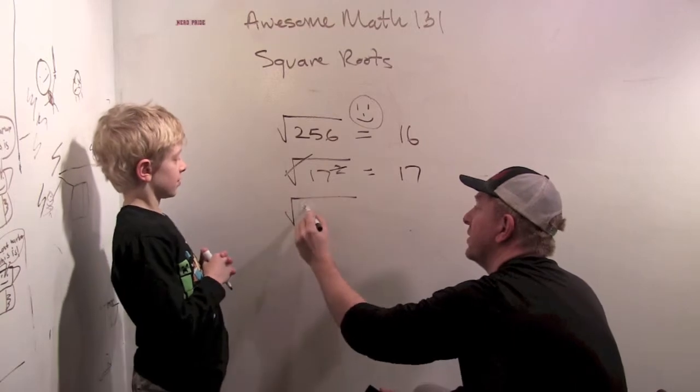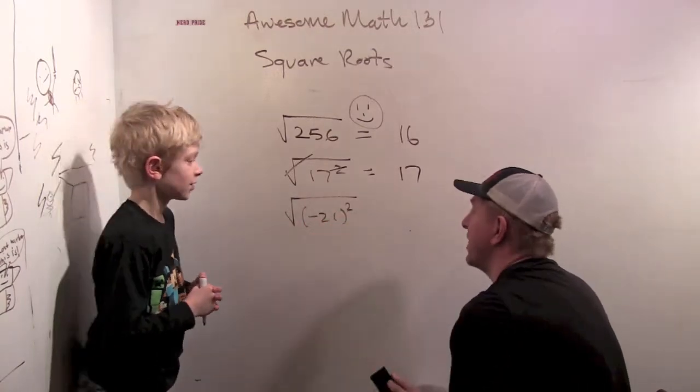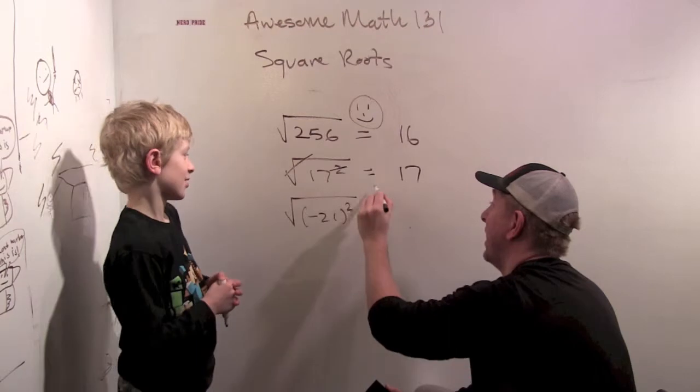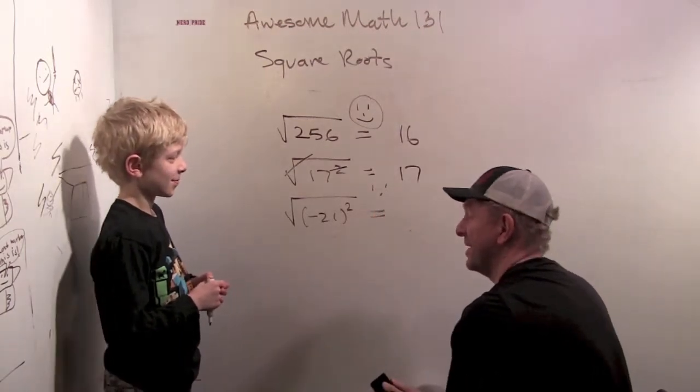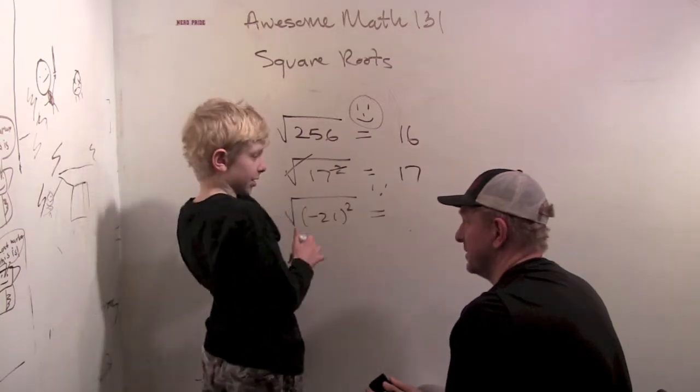What is the square root of negative 21 squared? It's undefined. Why is that? Because the square roots have to be non-negative.